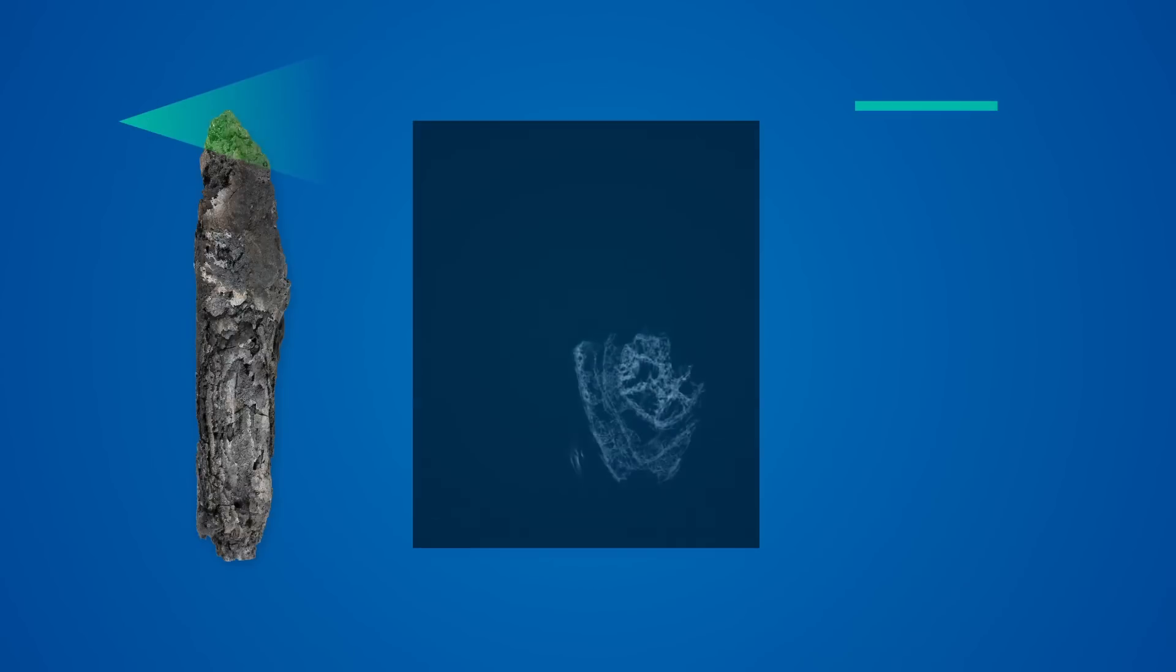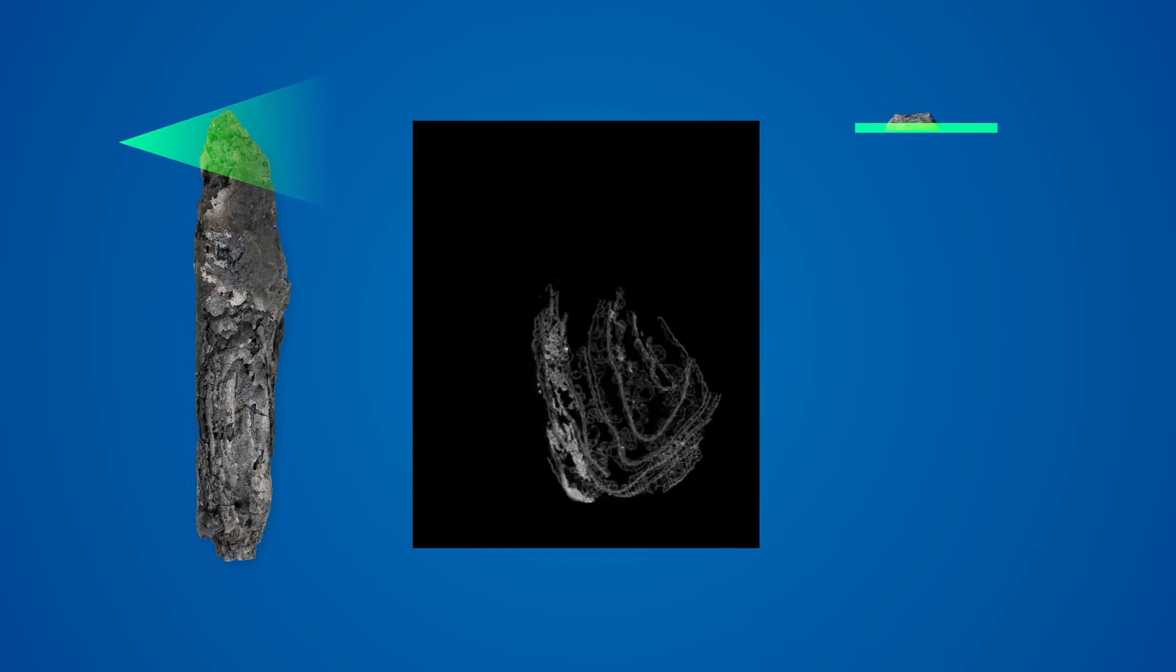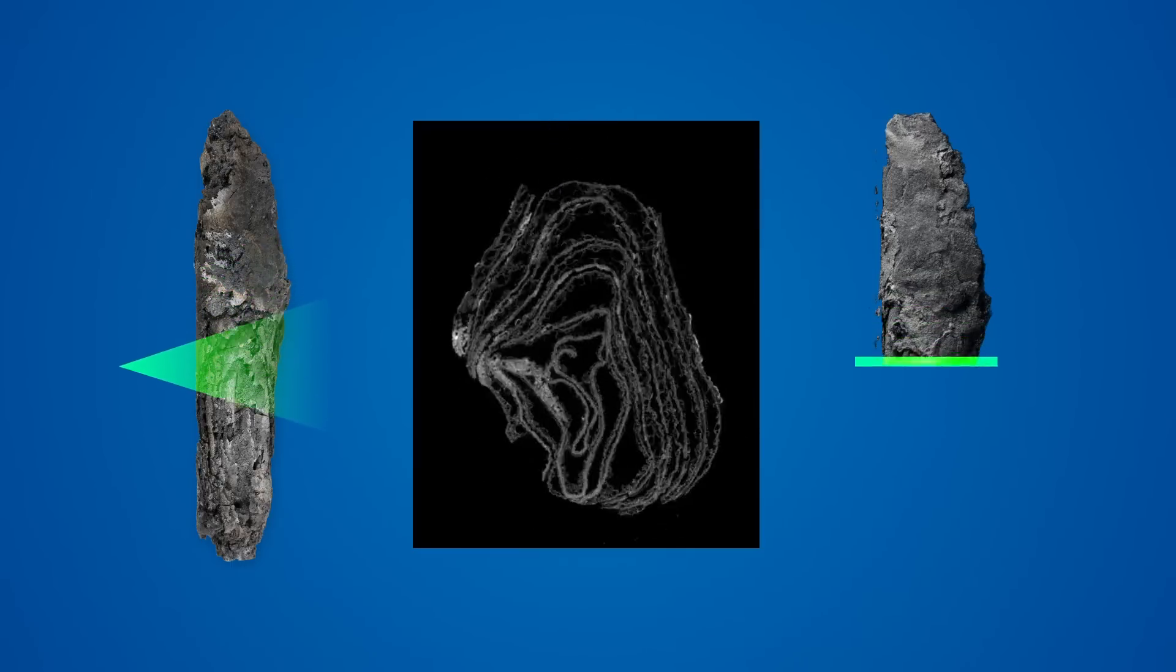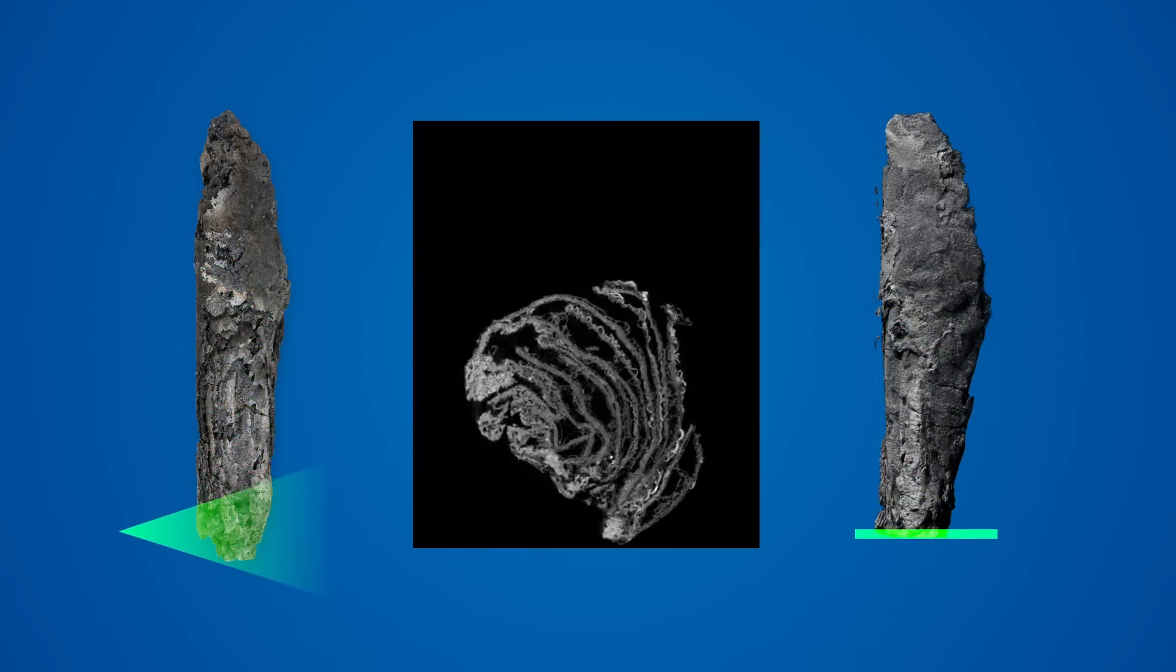Virtual unwrapping begins by acquiring a three-dimensional volumetric scan of the damaged manuscript. This scan produces a set of cross-sectional images that show the internal structure of the scroll.